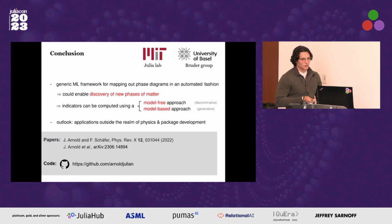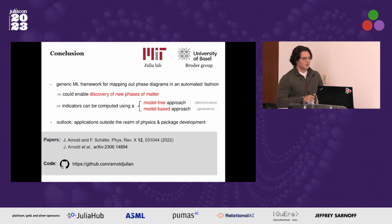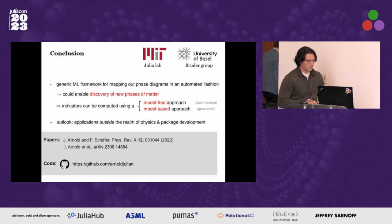In conclusion, I've presented a framework for mapping out phase diagrams in an automated fashion from data. This framework is generic — it doesn't rely on any specifics of the underlying system — making it well-suited as a tool to discover new phases of matter. Computationally, it all boils down to the computation of indicator functions, which can be approached in two distinct ways: a model-free way and a model-based way. As an outlook, we are currently applying these methods to systems outside of the realm of physics, and we're also looking to make these tools more easily accessible to the Julia community.